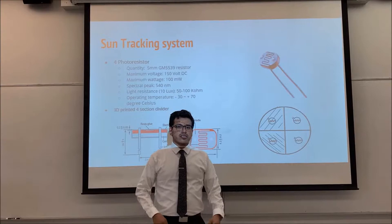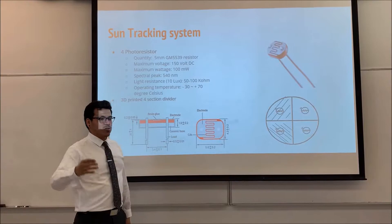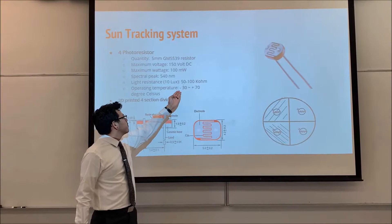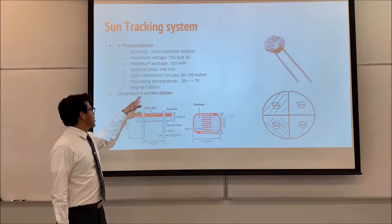The shade will increase the resistance of the photoresistors. And that will tell our system to relocate the position in order to get the most energy out of the sun. And as you can see, our photoresistors work within the 50 to 100 kilo ohms. So that's some helpful information for when using the nucleo. The operating temperatures are minus 30 to 70 degrees Celsius. And this is the overall dimensions of the photoresistors that we work with.